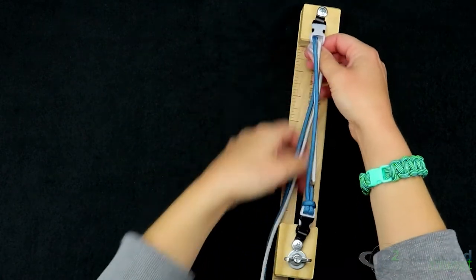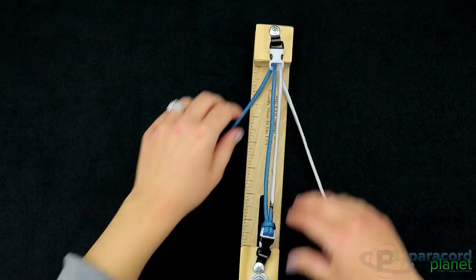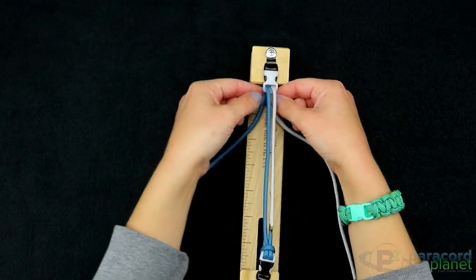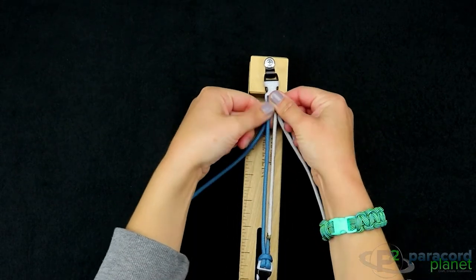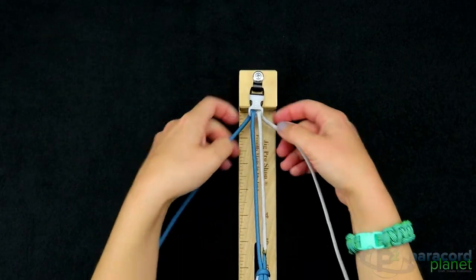You'll want one cord going on each side. The jig is helpful with this weave because it doesn't stay tight like the cobra. The cobra knots and holds its place; this bracelet does not really do that.